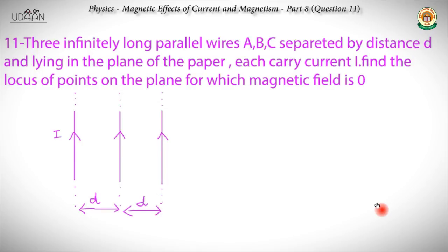We'll start with question number 11. Three infinitely long parallel wires A, B and C are separated by a distance D and lying in the plane of the paper, each carrying a current I. We need to find the locus of points on the plane for which the magnetic field is zero. We have three infinitely long parallel wires carrying current in the same direction, and we have to find the point at which the magnetic field becomes zero.